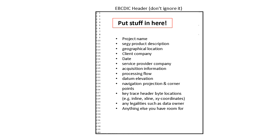If it's land data, we want to know the datum elevation, the navigation projection, the corner coordinate points, the trace header locations — what byte number do I find the inline, crossline, X and Y coordinates, or the elevation. Any legalities too — a lot of times the data owner wants their name in there. The most frustrating thing is to look for the EBSIDIC header and find it blank. Please fill it out.